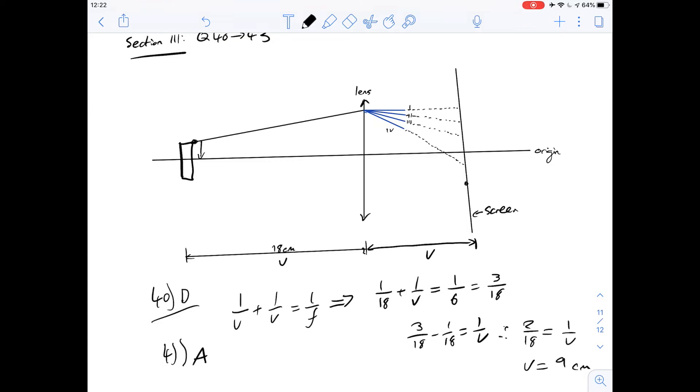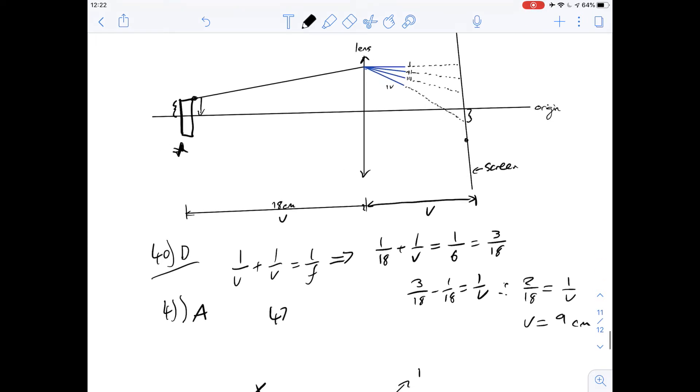So between C and D we need to decide if the size is going to be greater or smaller. So we can tell from our diagram that we've drawn here that the distance between the top of the coin and the principal axis is going to be smaller on the screen than it is in real life and therefore the size of the image is going to be smaller too. Which means for question 42 the answer we get is D.